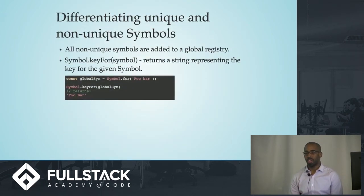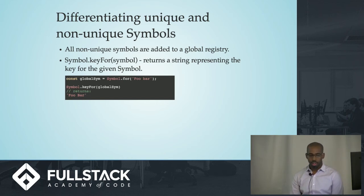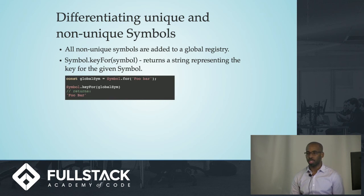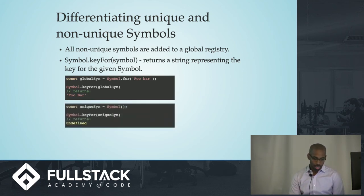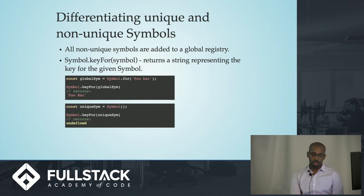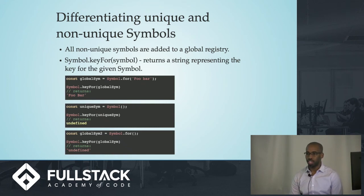You might be thinking: how do I tell the difference between unique symbols and global symbols? There's a special symbol.keyFor method that will tell you if a symbol is global — if it's global, it will return the string value inserted into the symbol when you created it. If the symbol is unique, it's going to return the data type undefined. But be careful when using this on symbols that don't have an optional string, because they're going to return the string 'undefined' instead of the data type undefined — meaning the symbol exists, but there was no string.